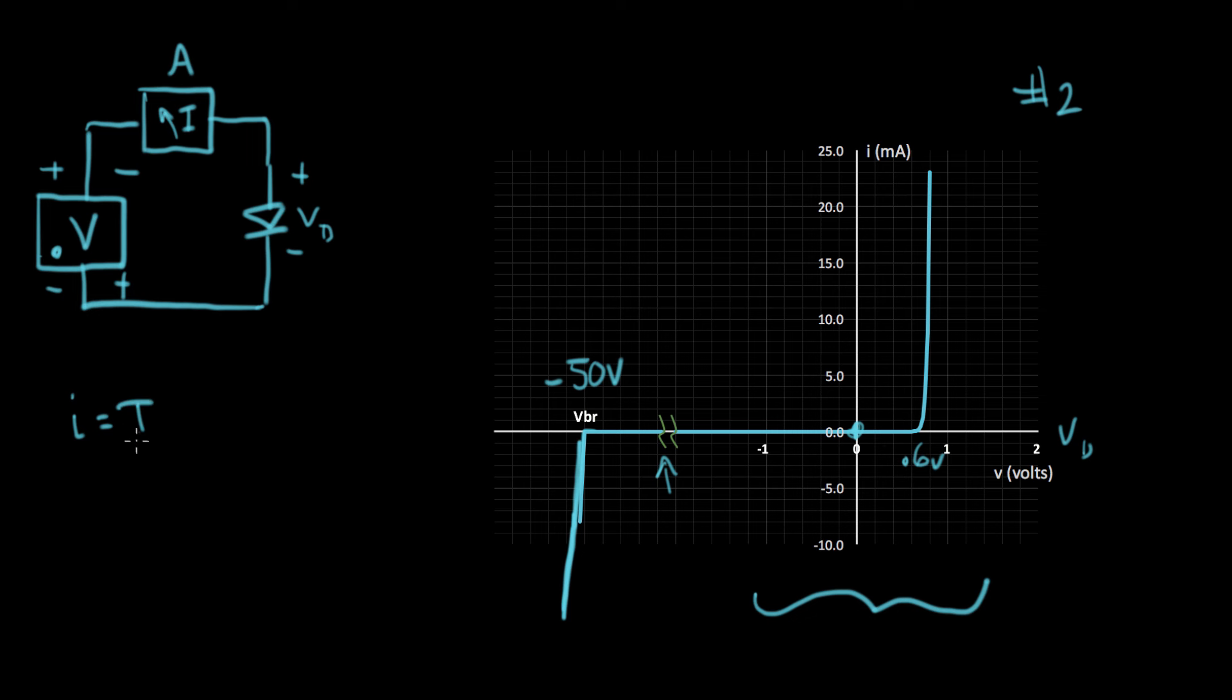I equals IS, this is a current, times E to the Q, that's the charge on an electron, times V on the diode, that's the voltage on the diode, divided by KT, minus one. K is Boltzmann's constant, and T is the temperature of the device measured in Kelvin. So this equation actually fits this part of this curve for a real diode. We'll look at these constants one at a time. IS is called the saturation current.